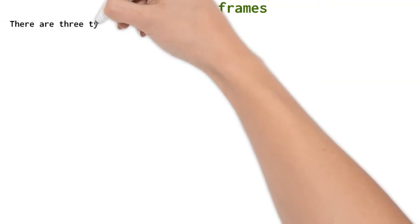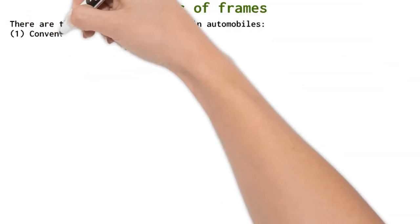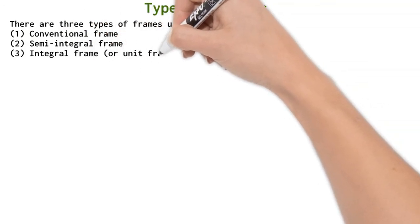Types of frames. There are three types of frames: conventional frame, semi-integral frame, and integral frame or unit frame.